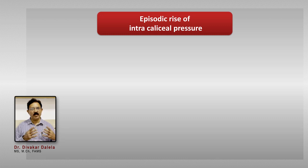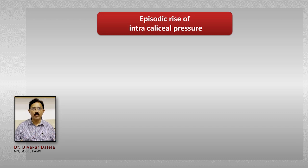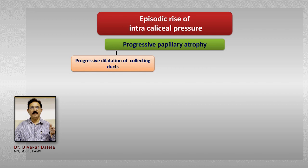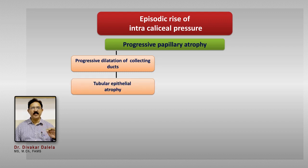But if a patient takes a lot of water for a while, the kidney starts producing more urine and suddenly it will blow up. Once it blows up, there is an episode of pressure rise, which puts pressure on the papilla and gives rise to papillary atrophy. Once papillary atrophy takes place, the collecting ducts which drain through the papilla into the calyceal lumen start getting dilated, and into the dilated collecting duct the flow of urine is sluggish and impeded. The pressure of the collecting duct is also higher and this results in atrophy of the tubular epithelial cells.